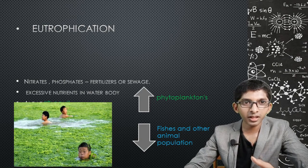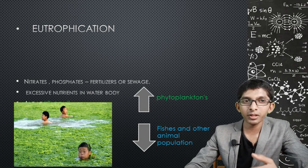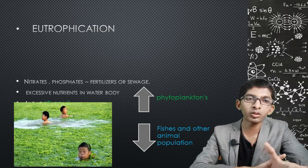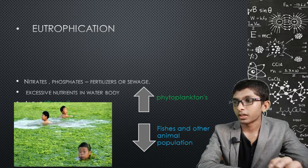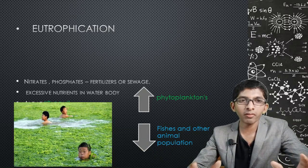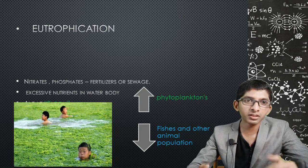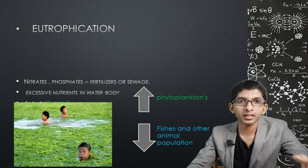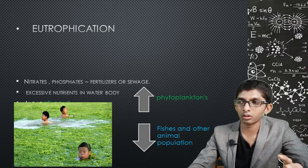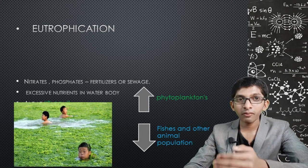Phytoplankton produce more than 50% of the world's oxygen. When algae bloom overcrowds and blocks light, phytoplankton cannot perform photosynthesis and oxygen production decreases. As algae overcrowd the water, oxygen levels in rivers and lakes drop significantly.